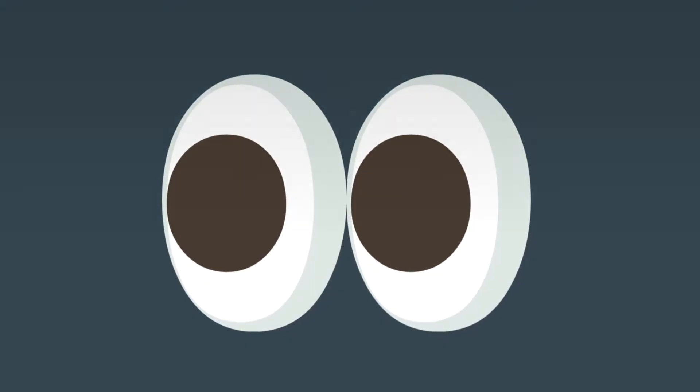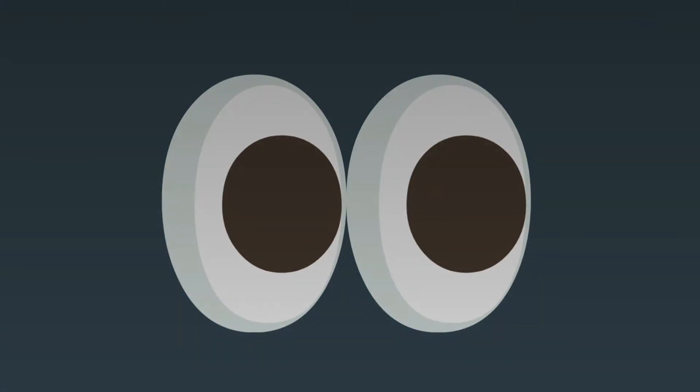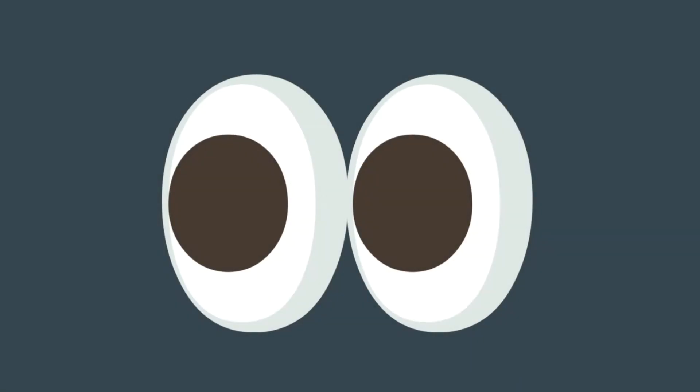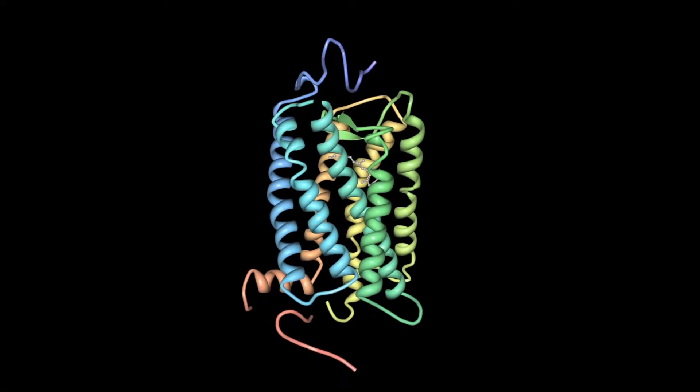While rods help you see in dim light, cones function best in bright light. Both kinds of cells contain photoreceptors that signal the brain in response to light, but rhodopsin is the one found in rod cells.